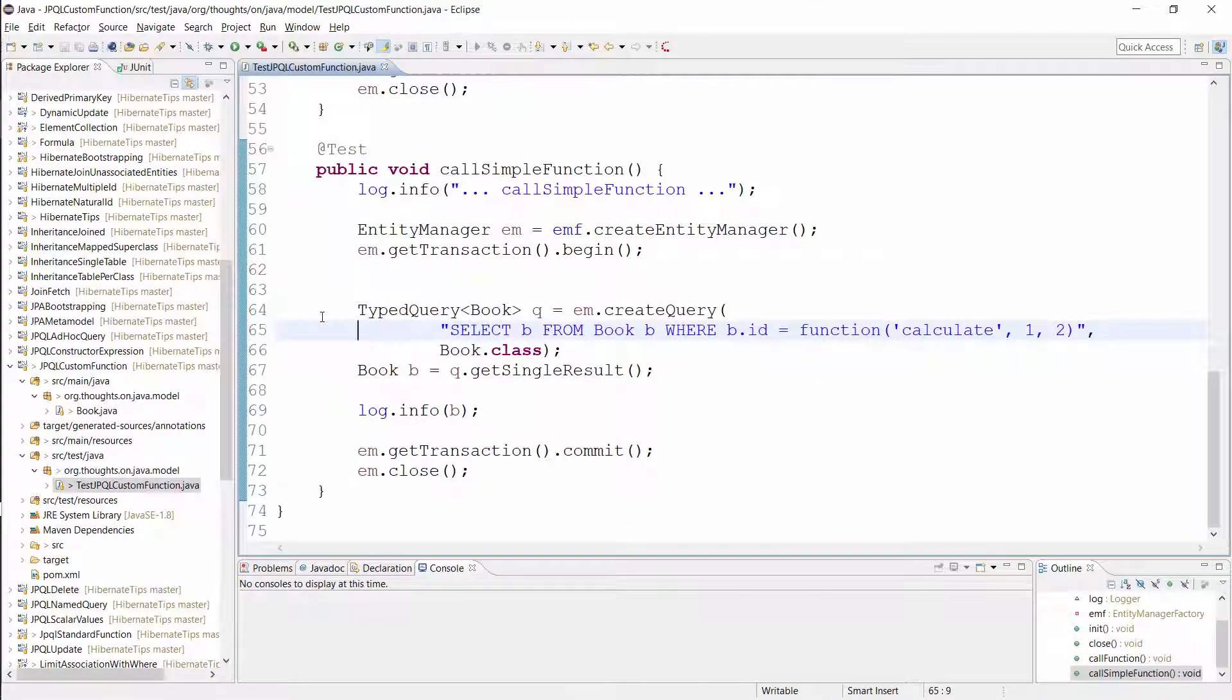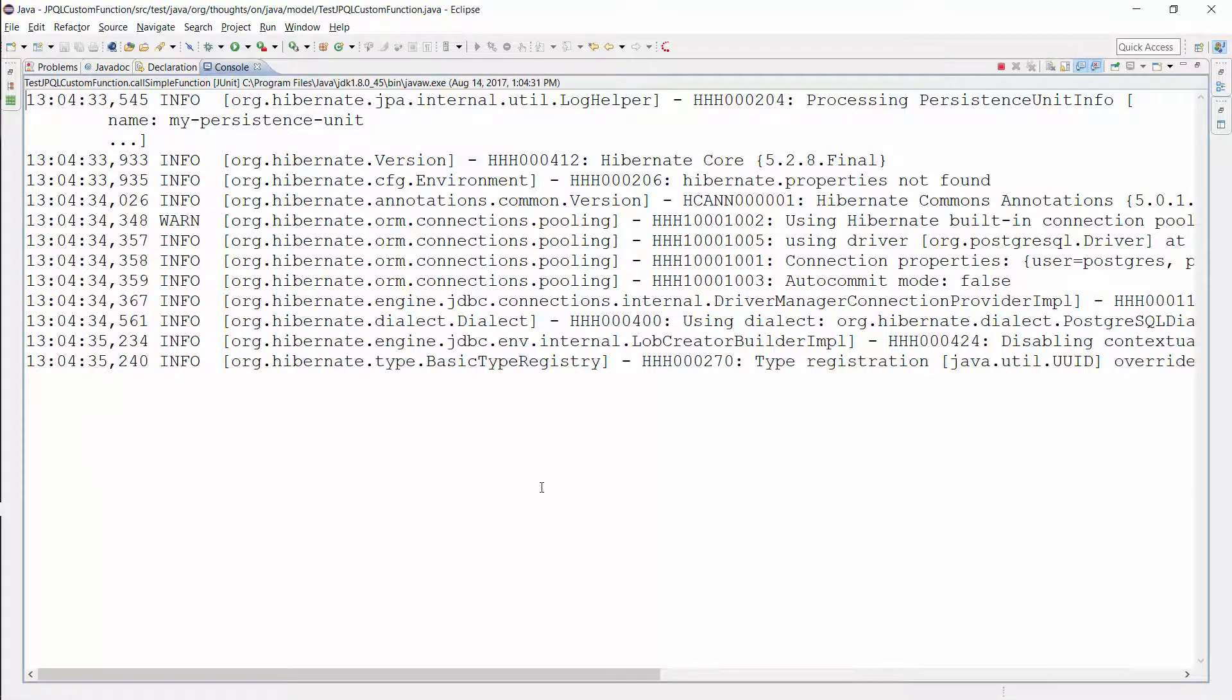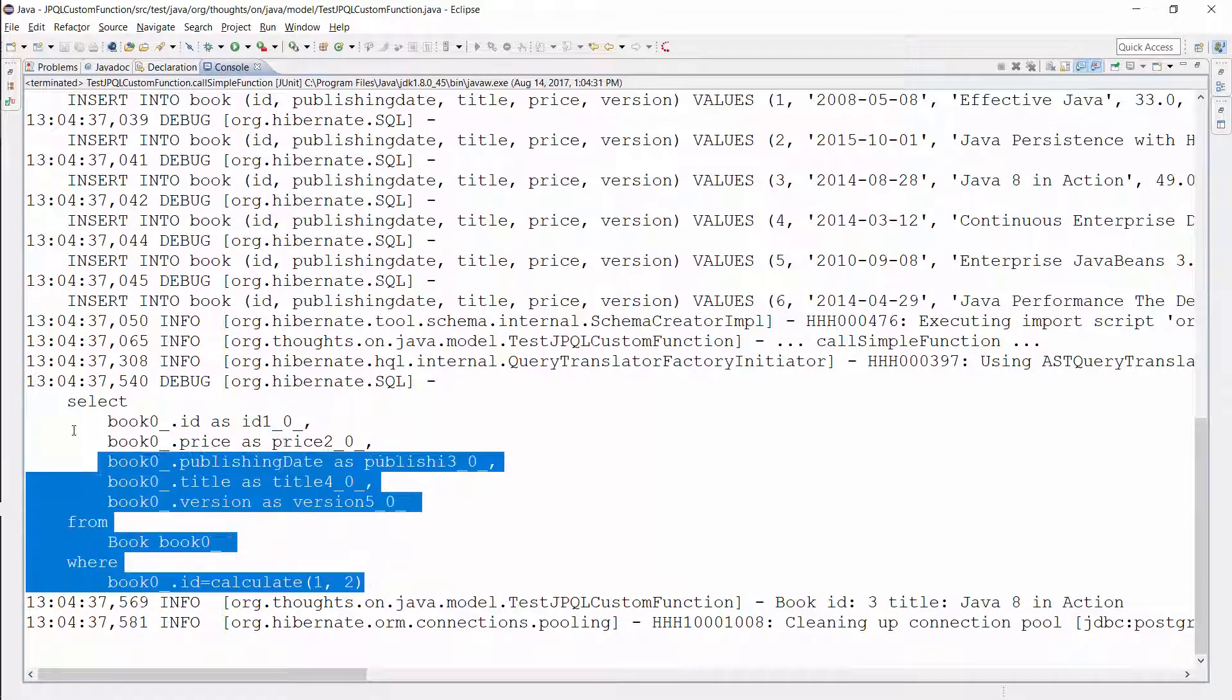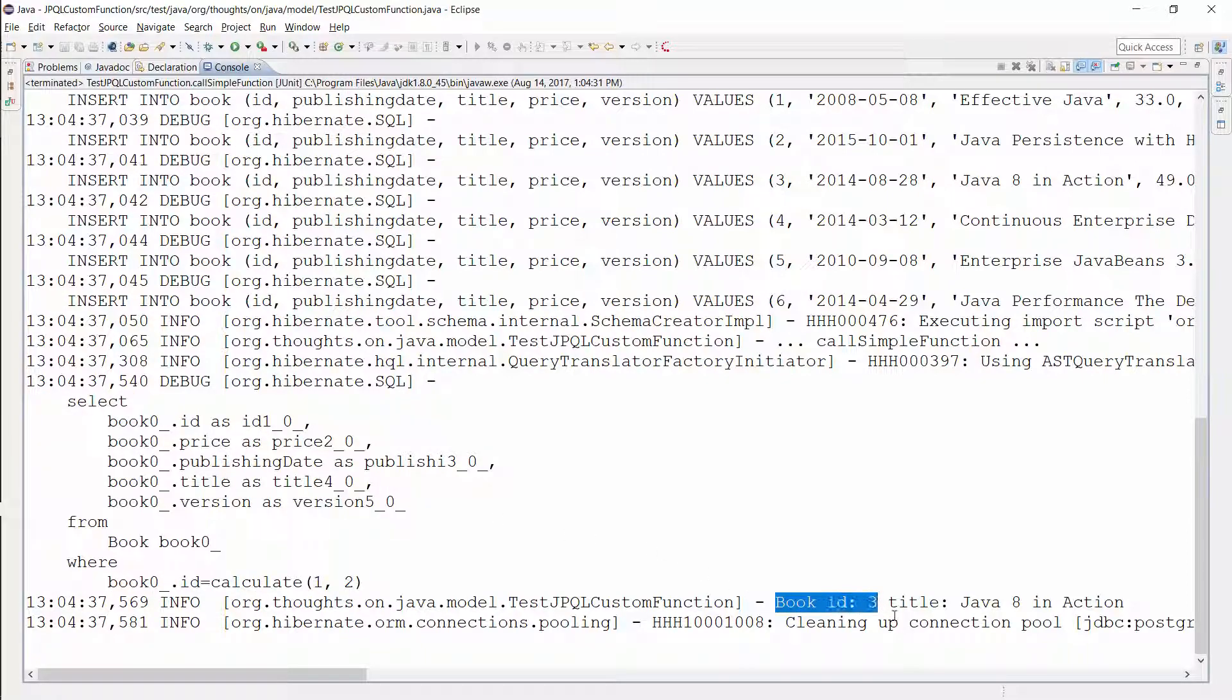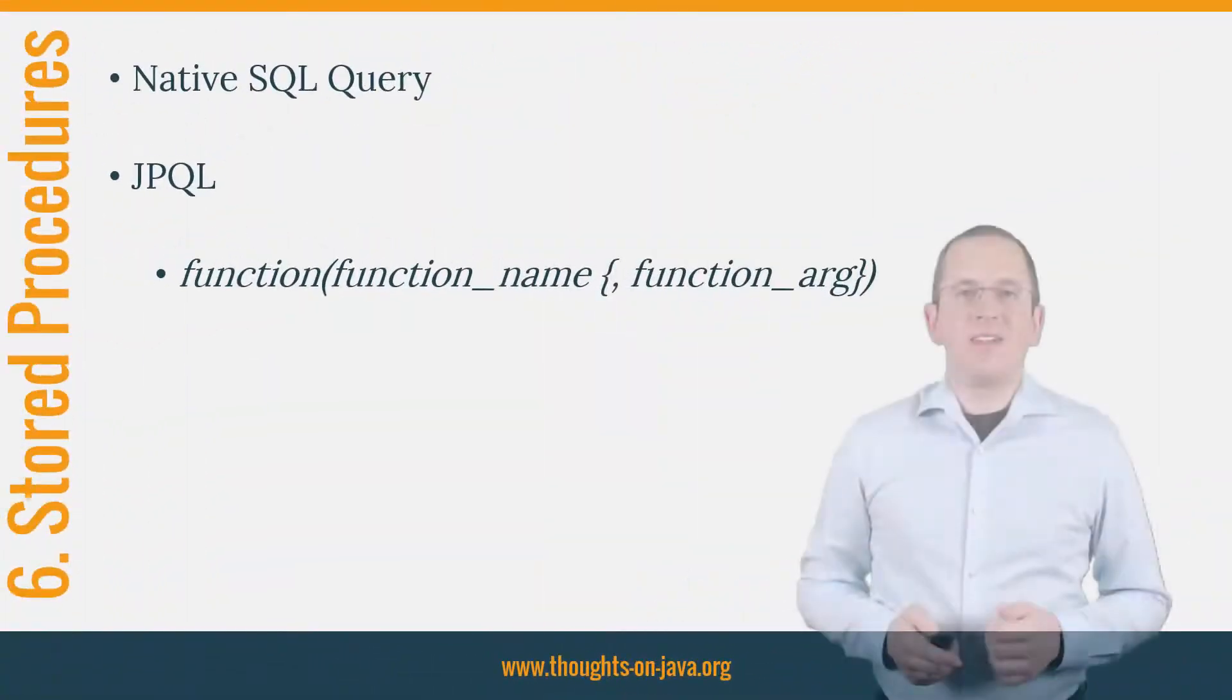Here you can see a simple example that calls the SQL function calculate with the parameters 1 and 2. This is a custom database function that calculates the sum of the two parameters. So, when I execute this test case, Hibernate will perform this query and PostgreSQL will call the function to calculate the sum of the parameters. It will then return the book that has an id equal to the calculation result. Here you can see the query and, as expected, it calls the calculate function and returns the book with id 3.